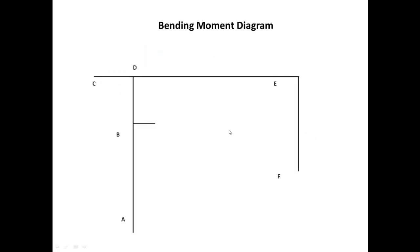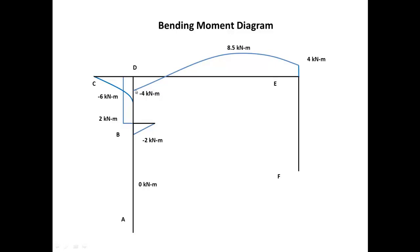For the bending moment diagram: zero moment in member AB, a moment in BB prime, a moment of 2 in member BD, a moment of negative 6 at the cantilever, and for member DE we start with negative 4. If you sum those two numbers from the adjacent members, you get negative 4 — and we have the maximum of 8.5 and the value 4 at the other end. Finally, for member EF, it starts with 4 on top and curves down to 0.